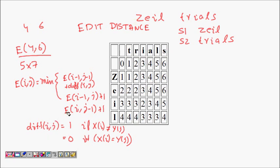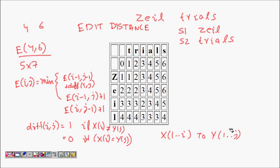e(i, j) represents the minimum edit distance for converting x[1..i] to y[1..j], where x[1..i] means the length-i prefix of x, and y[1..j] means the length-j prefix of y.